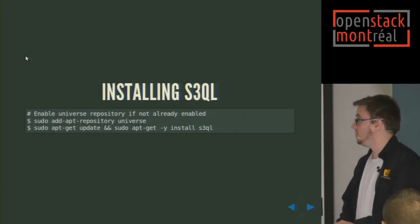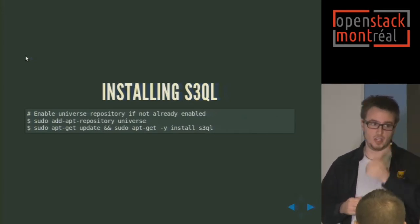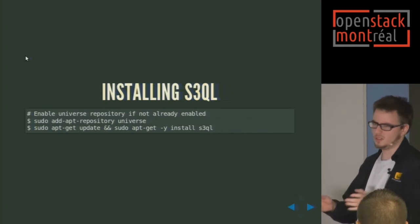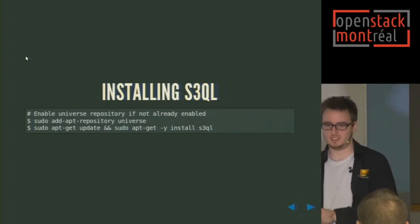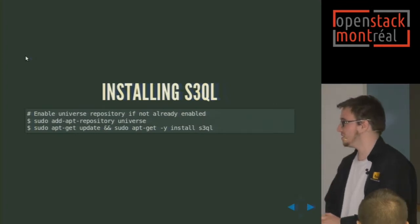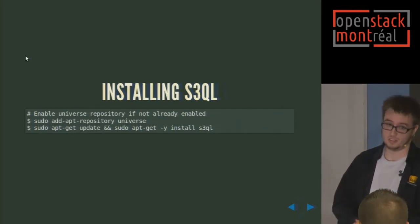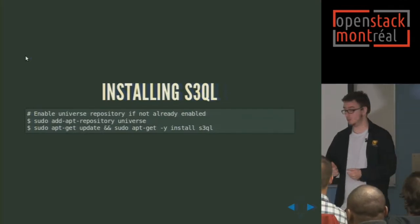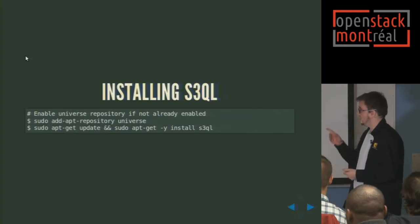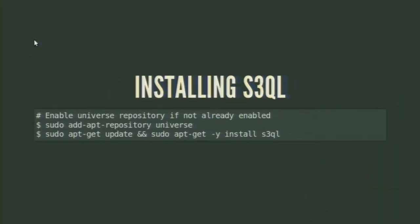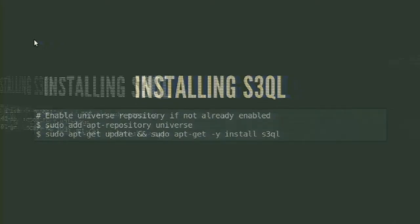Installing S3QL — it's packaged as well, so no configuring and installing from source. It's also available from source, but it gets complicated quickly. It's packaged in the universe Ubuntu repositories or in the PPAs as well. So you want to enable the universe repositories, and then install S3QL. As far as installing it, it's really that simple.